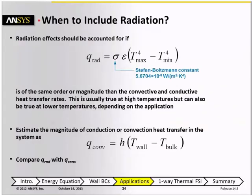Conventional wisdom says that radiation needs to be included when temperatures are high, and that's usually true, but there is a more precise way that you can estimate whether your simulation needs to include radiation. You can estimate a representative value for the radiative heat flux using the expression here, where you have the maximum and minimum temperatures in the system, sigma is the Stefan-Boltzmann constant, epsilon is the emissivity of your surfaces, and your temperatures are raised to the fourth power.